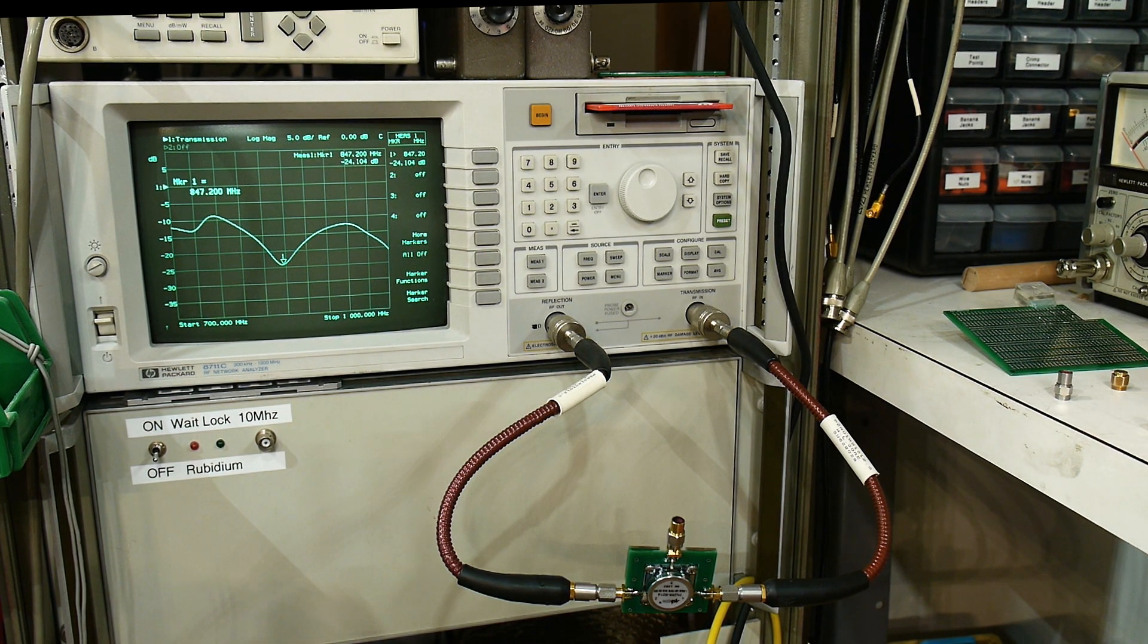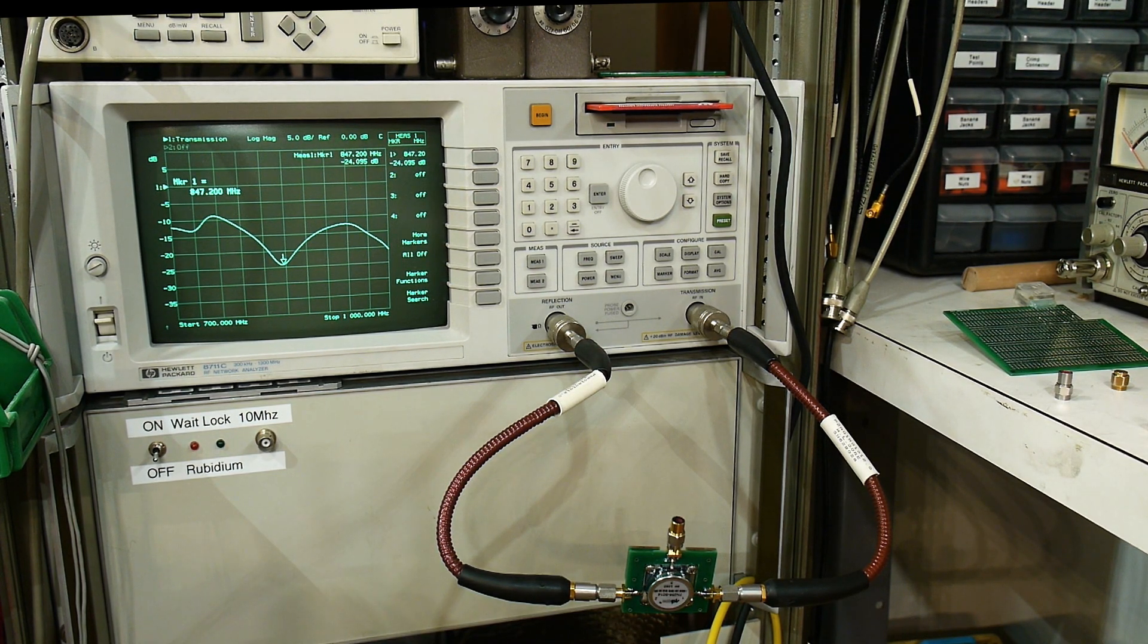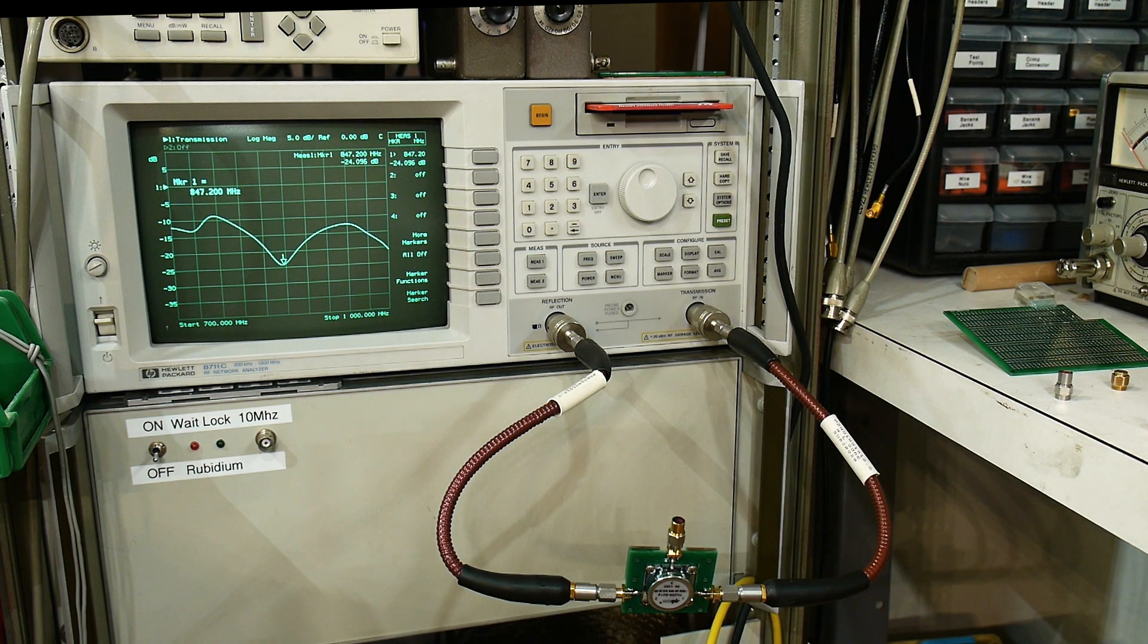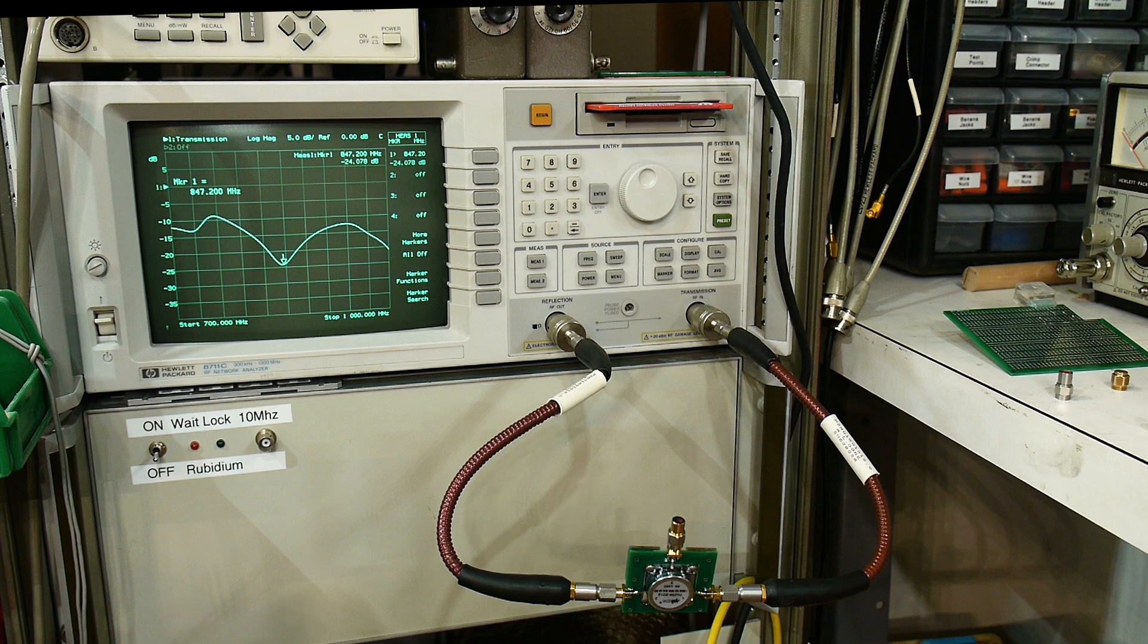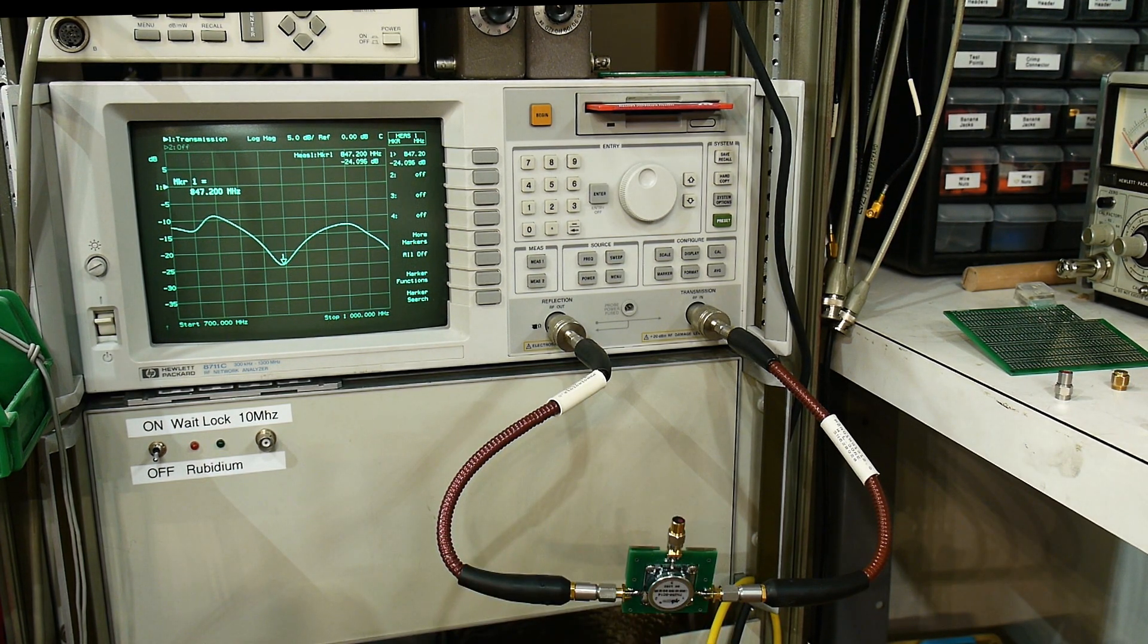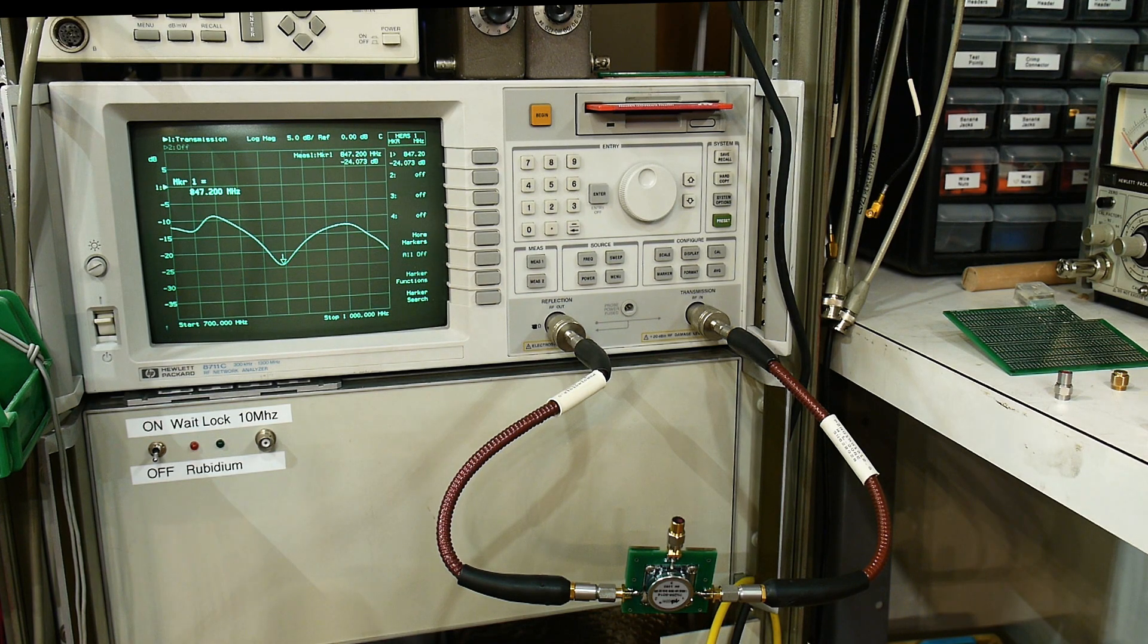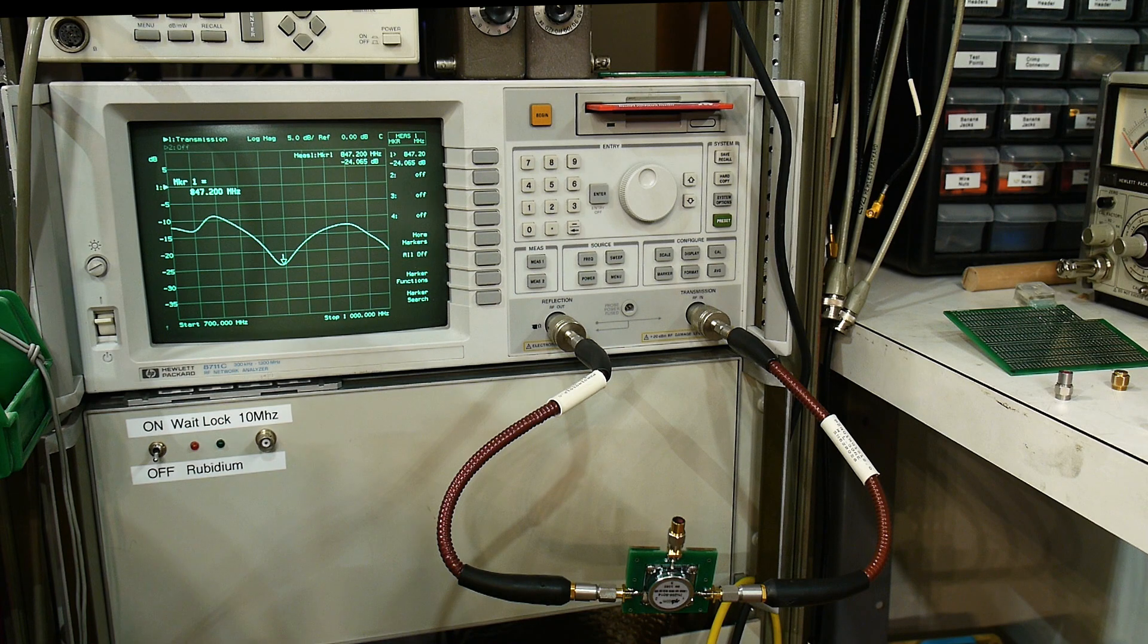The question he was asking was, I was showing him some magnets that I had. He was commenting on some magnets that I'd scrounged out of a hard disk drive that everybody's done that. And I had some other magnets that were pretty powerful. And he kind of said, what if you took one of those really powerful magnets and put it on the circulator? What would it do? And so I wasn't quite sure.